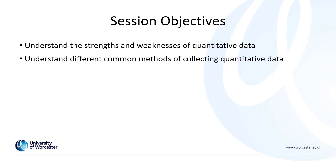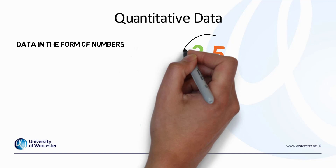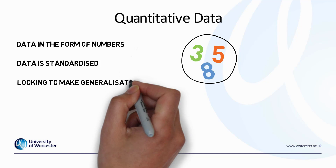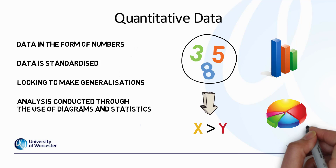Quantitative data is data in the form of numbers, and this involves reducing the world around us — along with possibly people's views, beliefs, and experiences — into numbers. This reduction into numbers allows standardization and supports the researcher in making generalizations. Analysis is conducted through the use of diagrams and statistics explaining the meaning and relationships between these numbers.